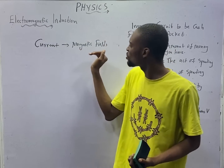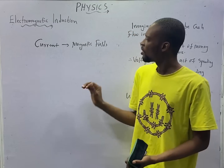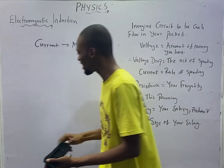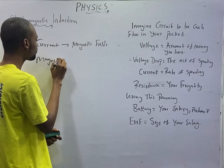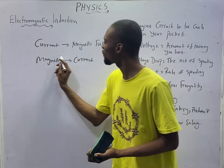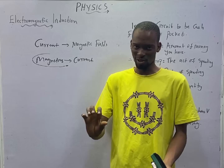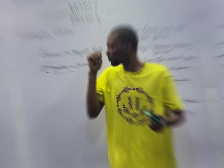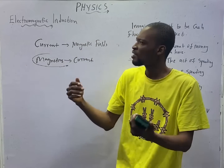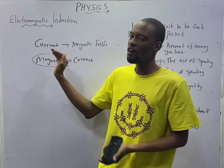So if current can produce magnetic fields, we can say that is the magnetic effect of current. The finding that current can produce magnetic fields led to the idea that magnetic fields can also produce current. This whole idea — that magnetic fields or magnets can produce current — is the focus of electromagnetic induction. Electromagnetic induction is the production of current from magnets; it is the production of current without batteries. It is the reverse of the magnetic effect of current.